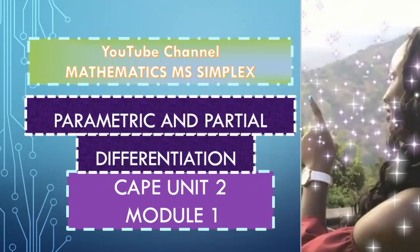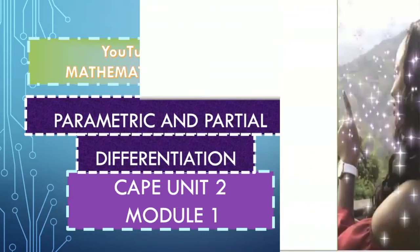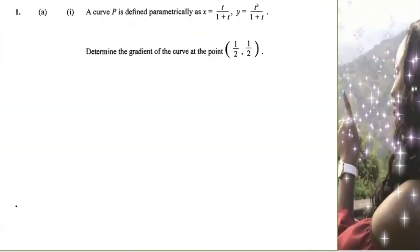Welcome back guys. Today we'll be doing parametric and partial differentiation. This is coming from CAPE Unit 2, Module 1, Past Paper 2080. Question 1 reads as follows: a curve P is defined parametrically as x equals t over 1 plus t, y equals t cubed over 1 plus t. Determine the gradient of the curve at the point x equals one-half and y equals one-half.